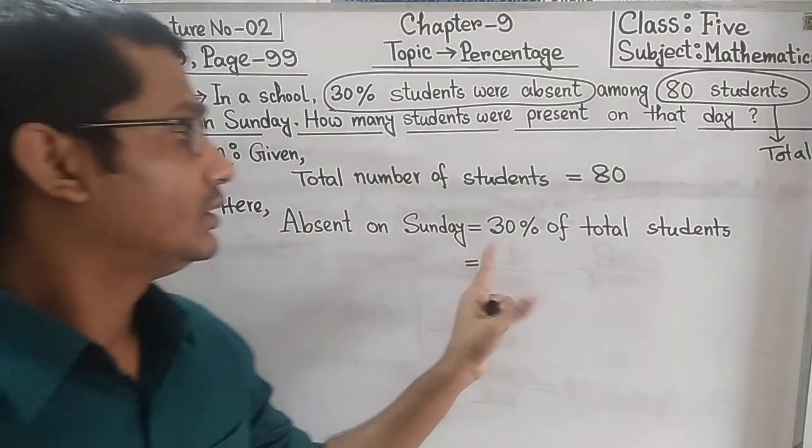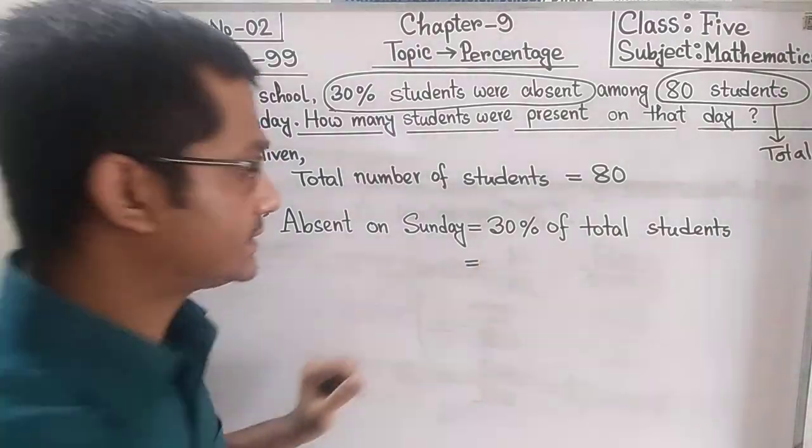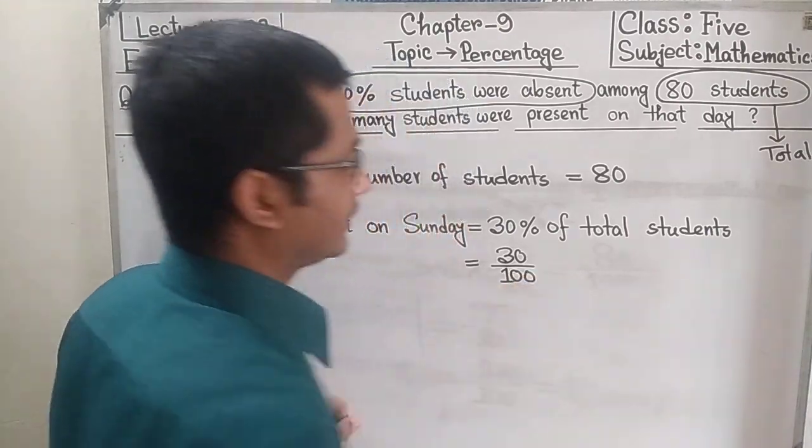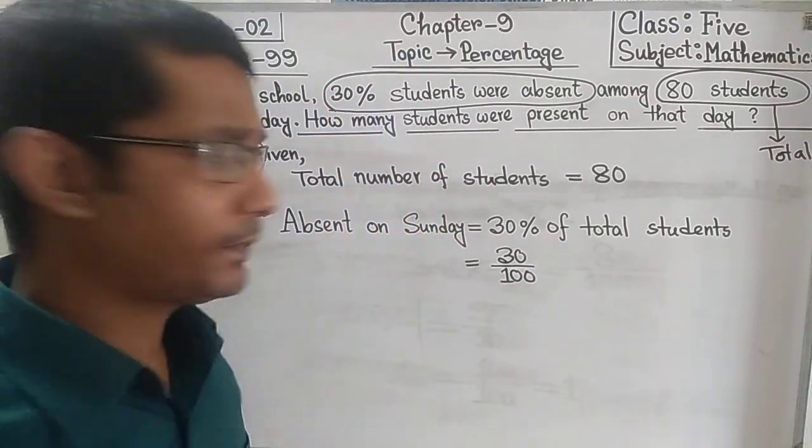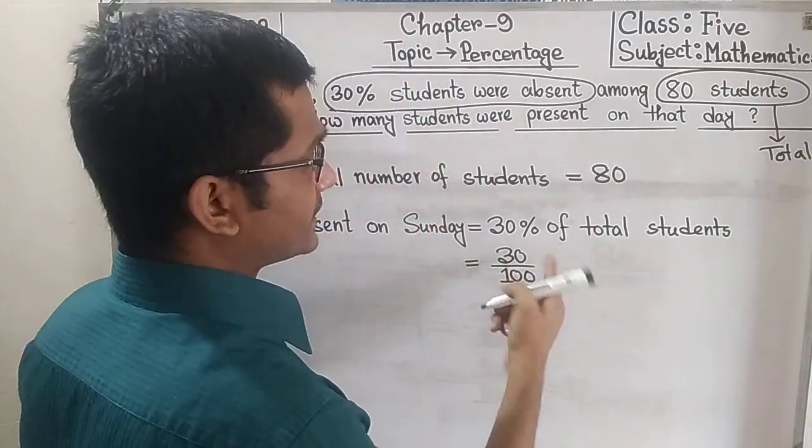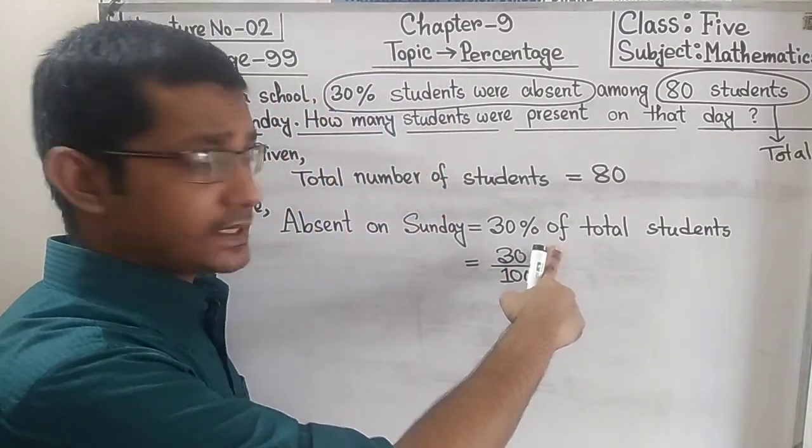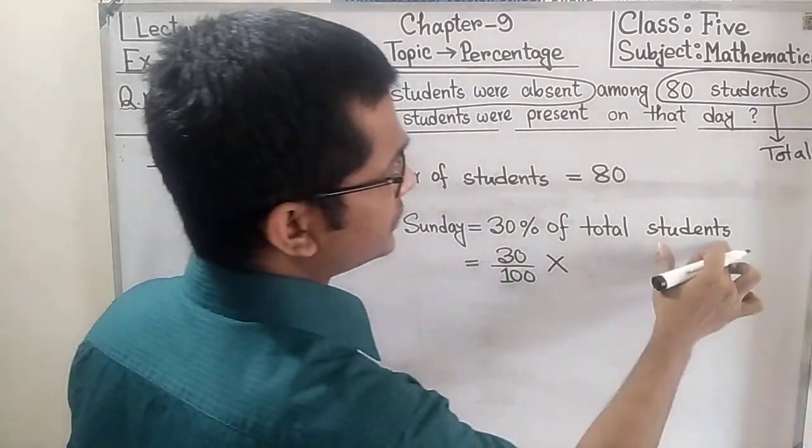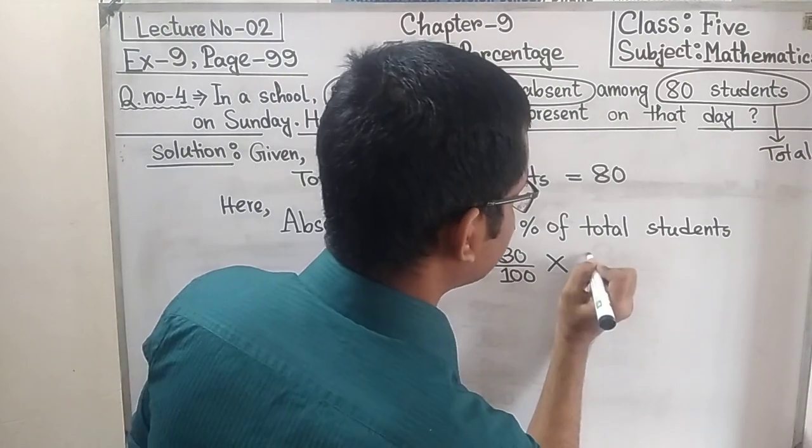We already know 30 percent is 30 by 100. Then we have to put a multiplication sign for this 'of'. Again I will say that we have to put a multiplication sign for this 'of', and the number of total students is 80.